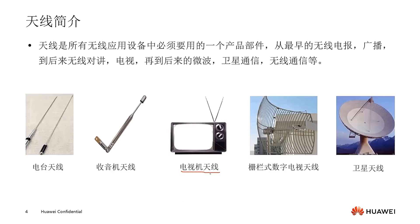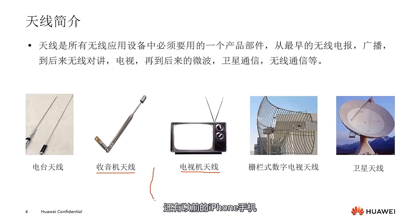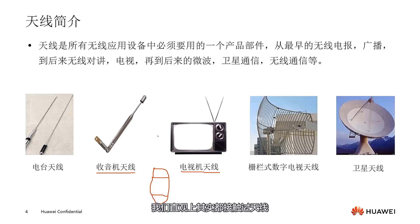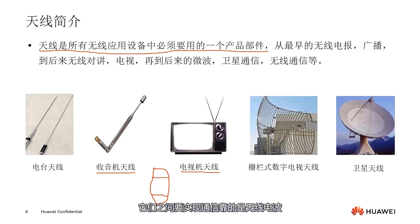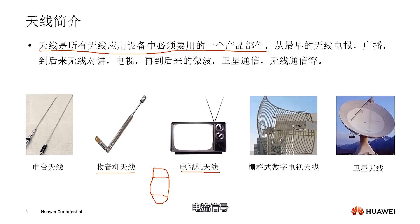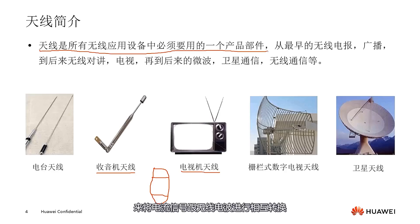Let's first learn about the concept of antennas. In everyday life, we encounter examples of antennas everywhere — the antennas on childhood TVs, on radios used in college English listening exams, and the early iPhone models with two white stripes on the top and bottom that actually encapsulated antennas. Antennas are ubiquitous because they are a necessary component in all wireless application devices. Wireless devices like mobile phones and radios communicate via radio waves, but inside these devices, electrical signals operate. A converter is necessary to translate electrical signals into radio waves and vice versa — antennas play the role of this converter.